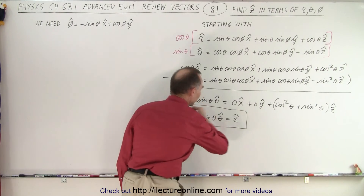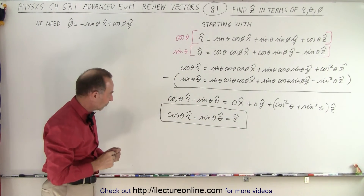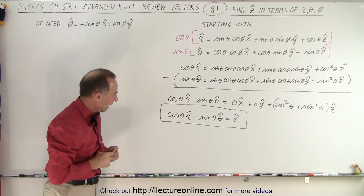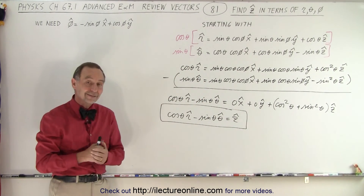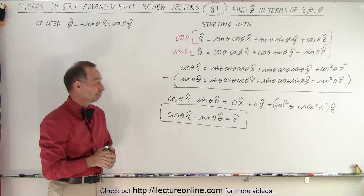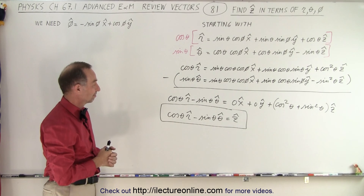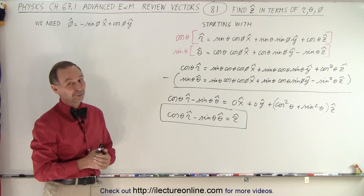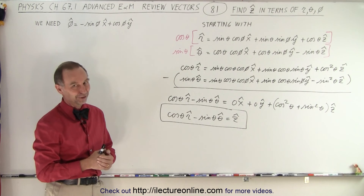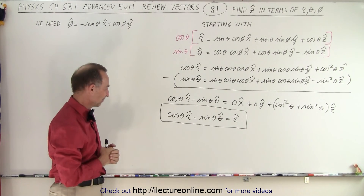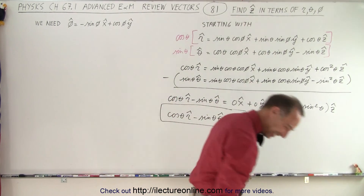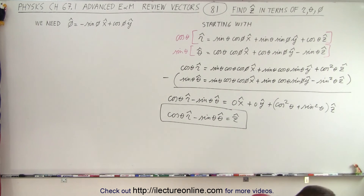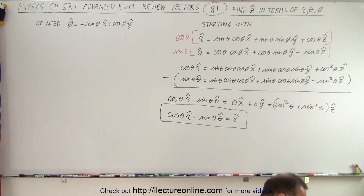So a fairly simplistic equation for the z unit vector in terms of r and theta, and that is how it's done. Cosine of theta minus sine theta — yep, that looks like the right answer. Victory!